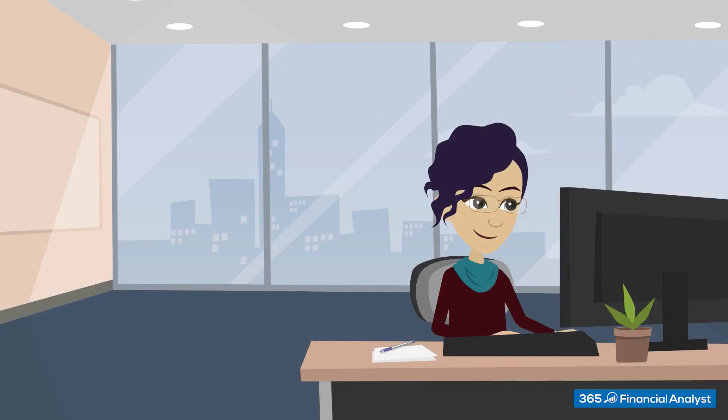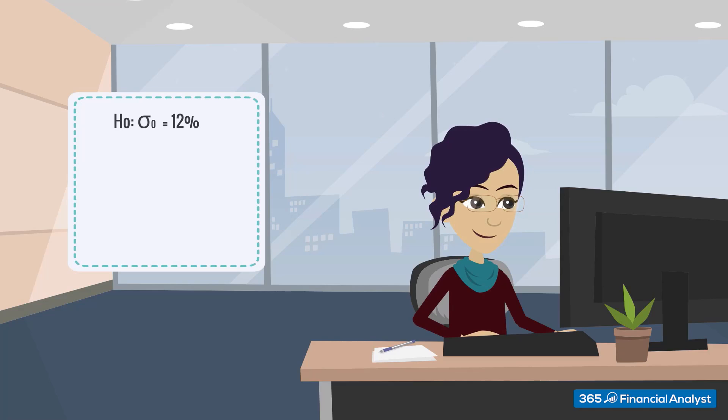A risk manager believes that the true population standard deviation of her consumer loan portfolio is 12%. However, some recent statistical evidence indicated that the actual standard deviation for the last two years has been 14%. And now, the risk manager wants to test whether the true population standard deviation is still 12%, or is it a different number?